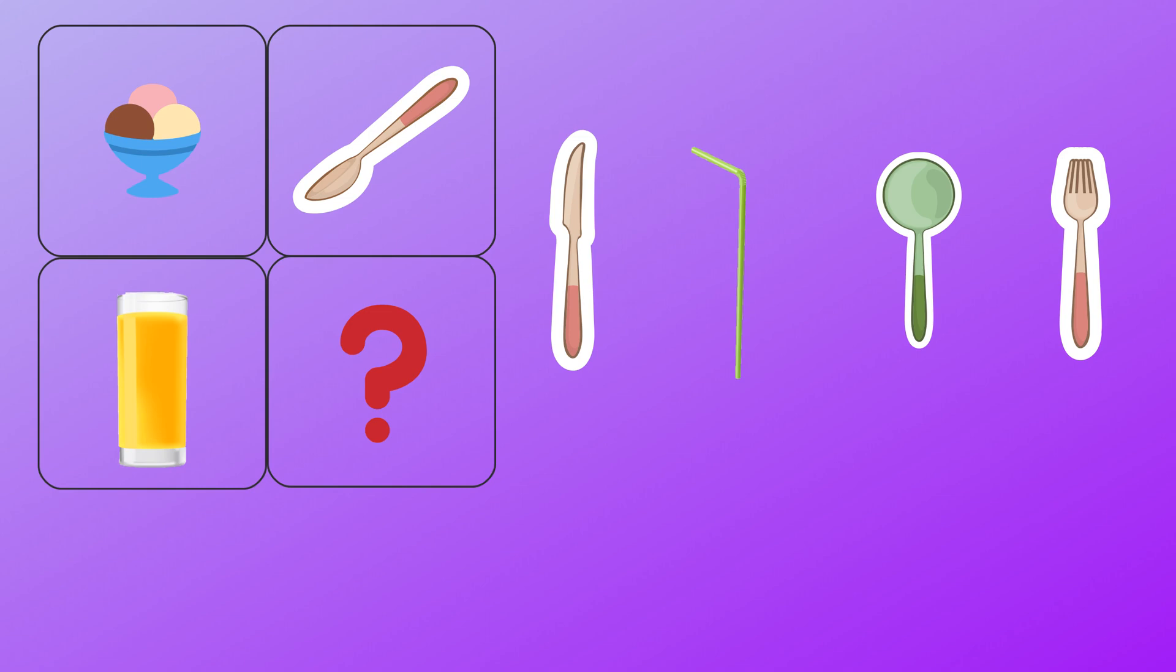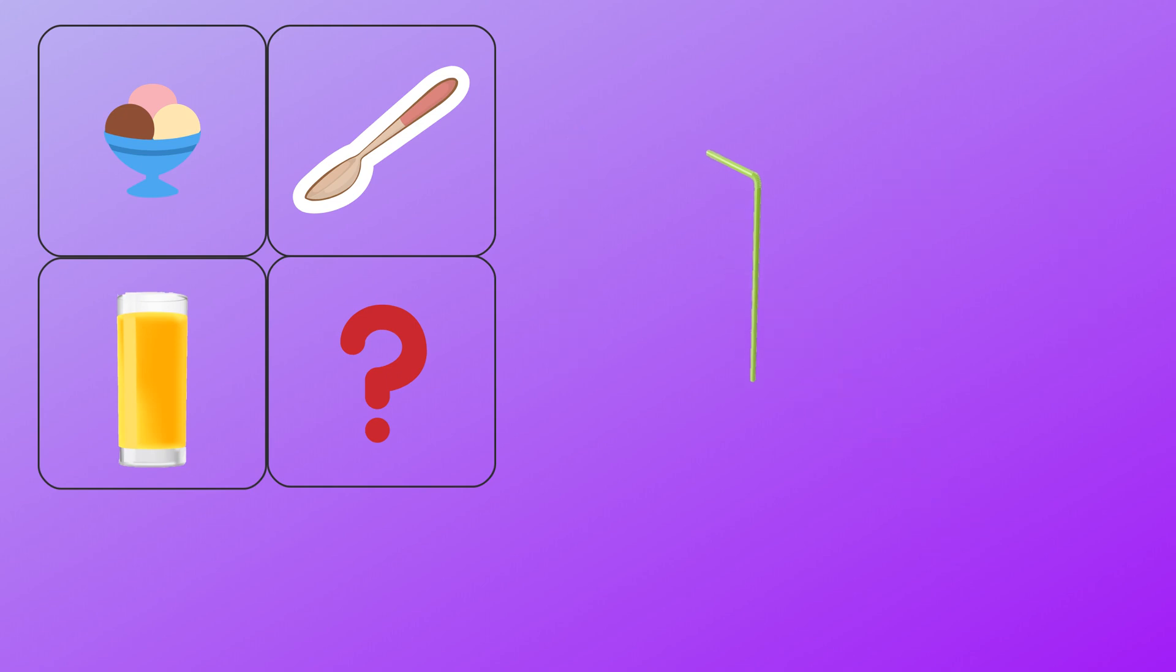In the bottom picture we have a juice. What object do we use to drink a juice? It's a straw.